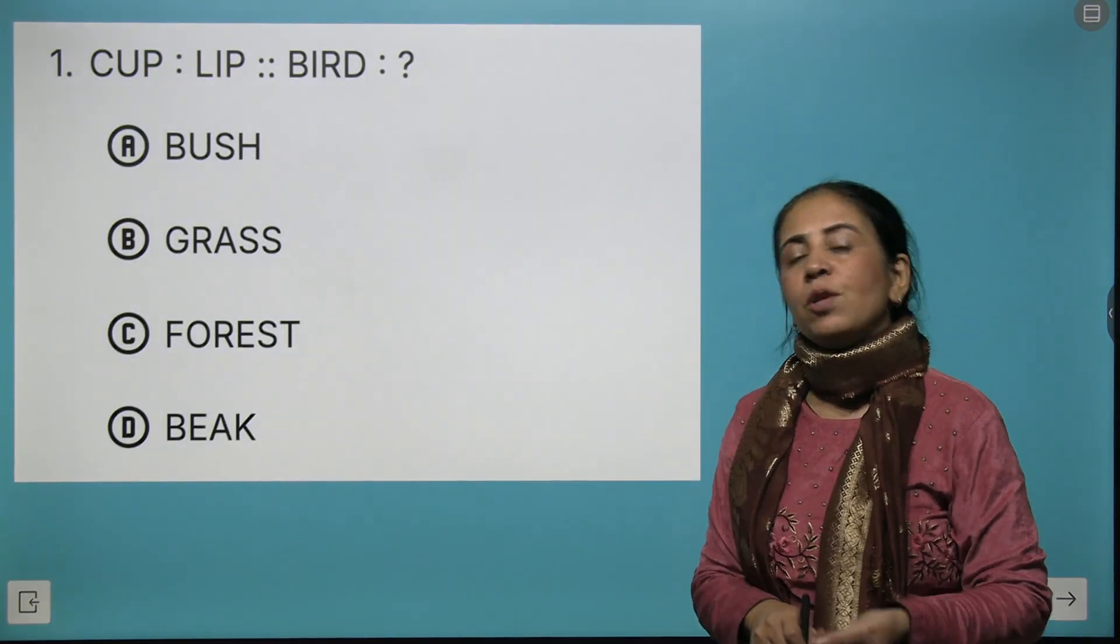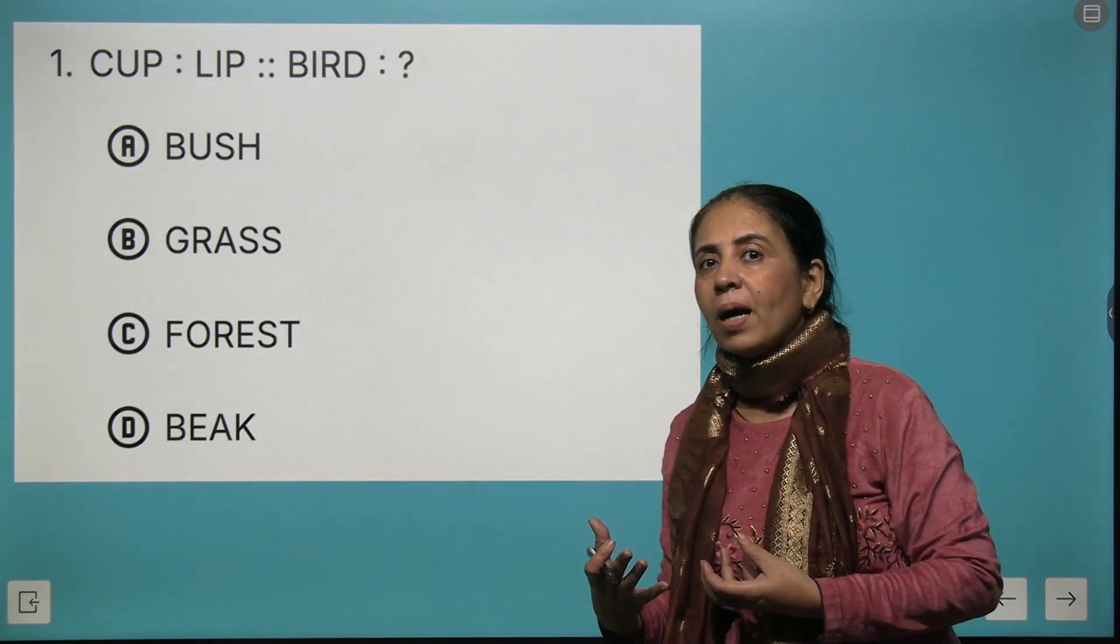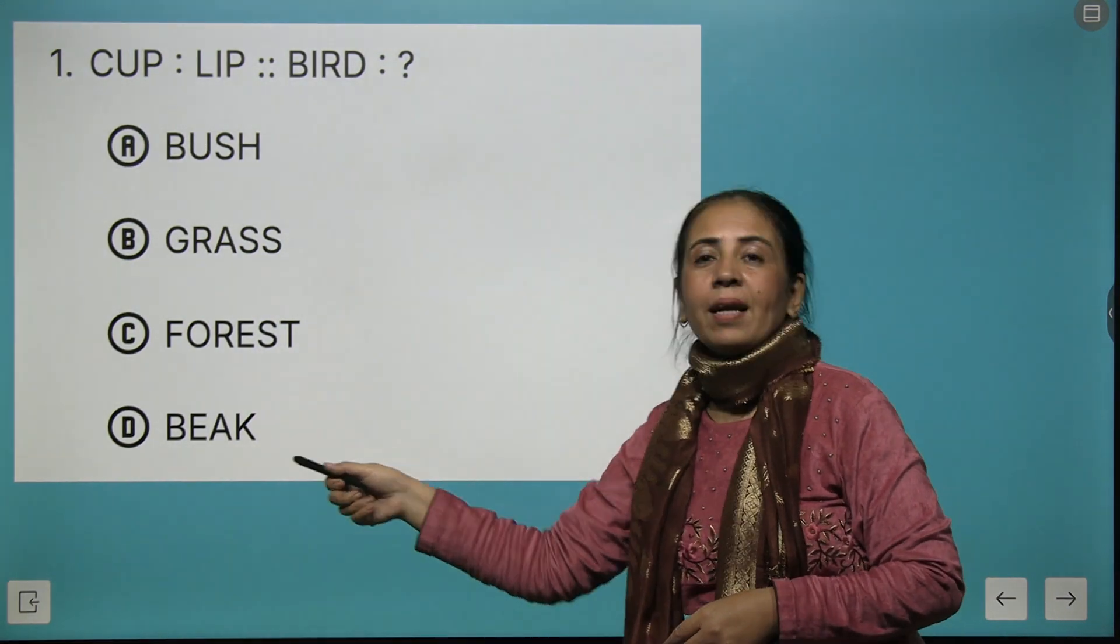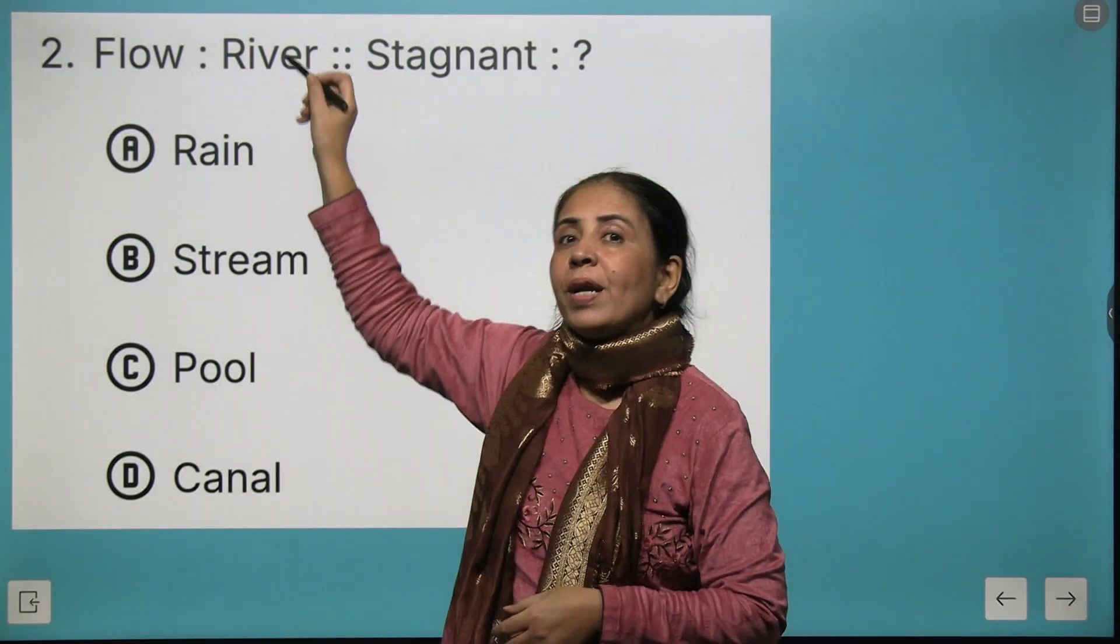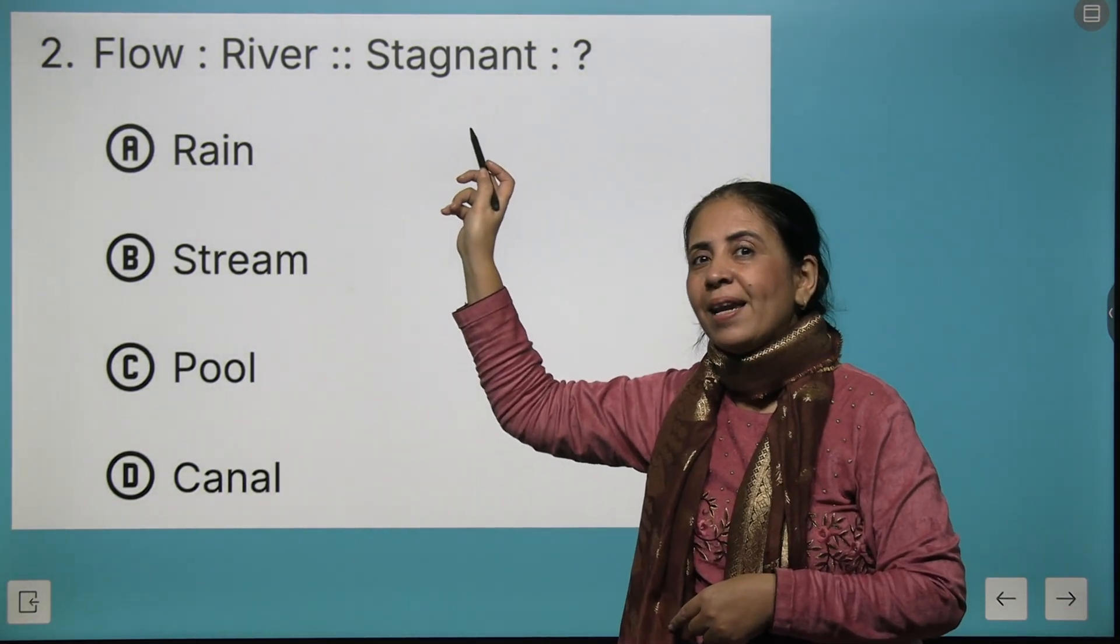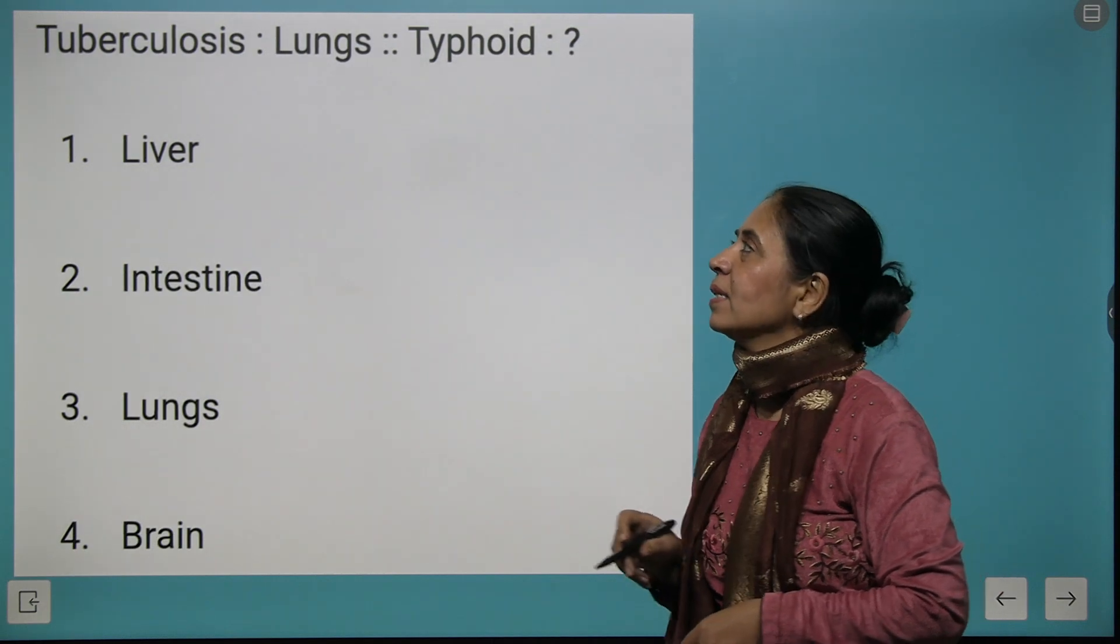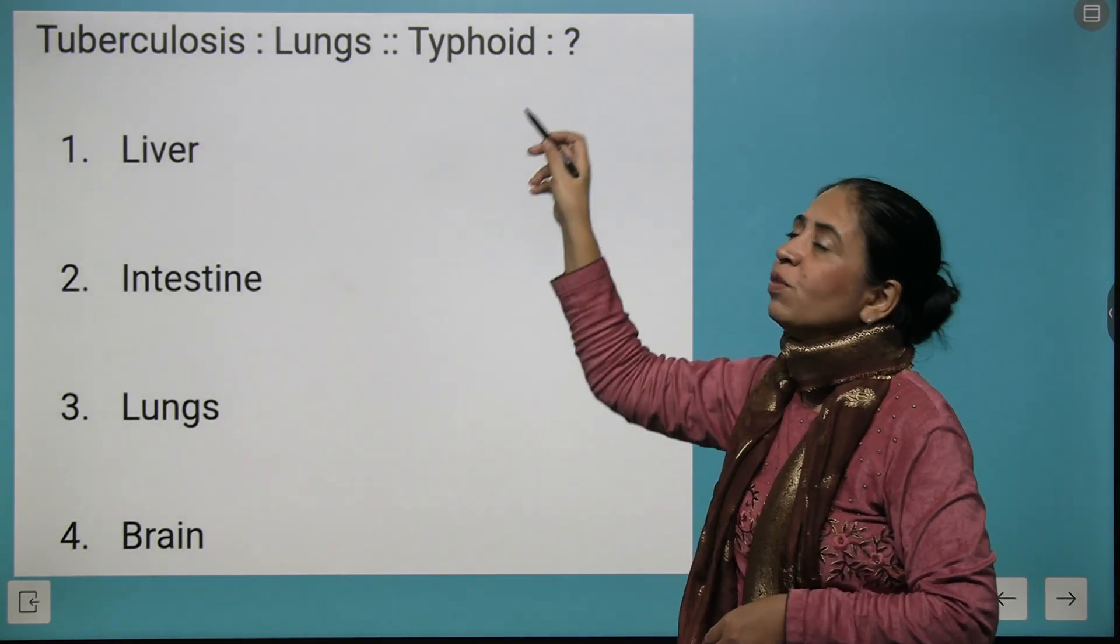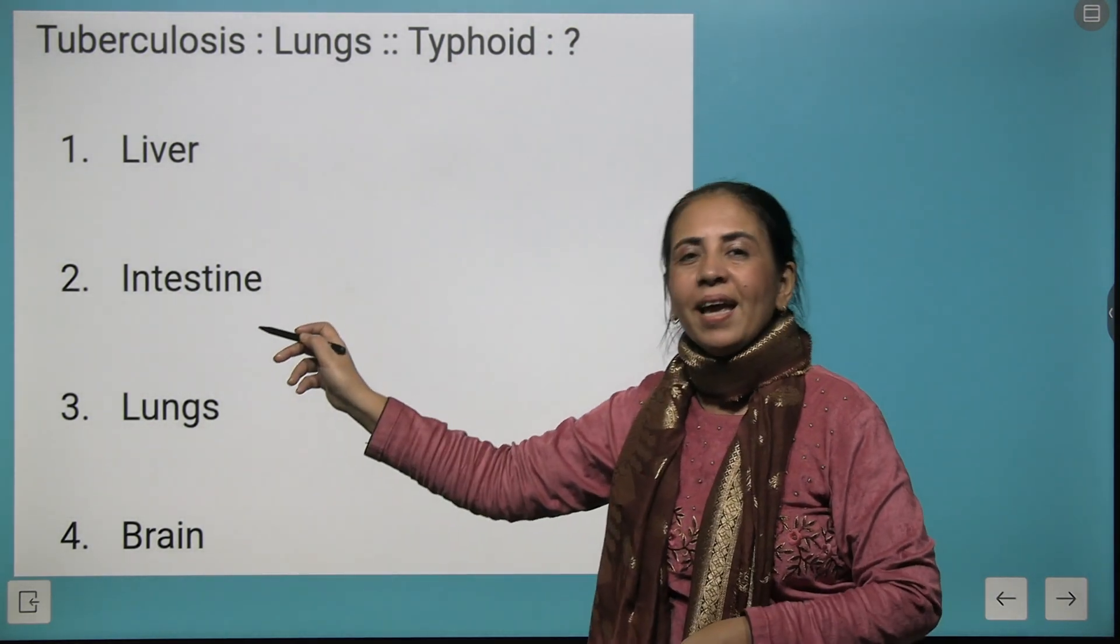Now moving ahead we have some more analogy. Cup lip. River flows. Now my question to you is that what is stagnant? That's brilliant. We have pool as the right answer. Tuberculosis is a disease for lungs. And what is typhoid? It is a disease of which part of the body? Rightly answered that is intestine.